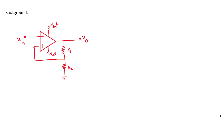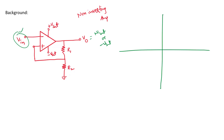Before solving this problem, we need to understand what a non-inverting amplifier is. In a non-inverting amplifier, the output voltage is either at plus Vsat or minus Vsat, depending on the input voltage. For example, assume the output voltage is at plus Vsat.